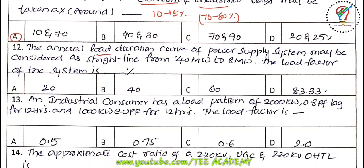Next question: the annual load duration curve of a power supply system may be considered as a straight line from 40 MW to 8 MW. The load factor of the system is around 60 percent.